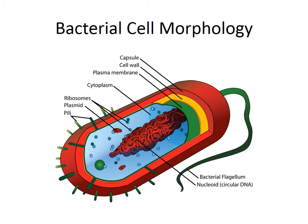Here's a nice generalized picture of a bacterium. We have a capsule on the outside, the cell wall inside the capsule, and then the plasma membrane. Not all bacteria will have all of these structures — this is just generalized. Different bacteria will have different components. They will all have a cell wall; not all will have a capsule.